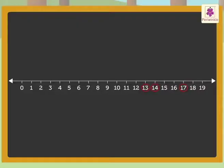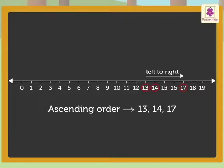Now, read from left to right to get the ascending order. Hence, the ascending order is 13, 14, 17.